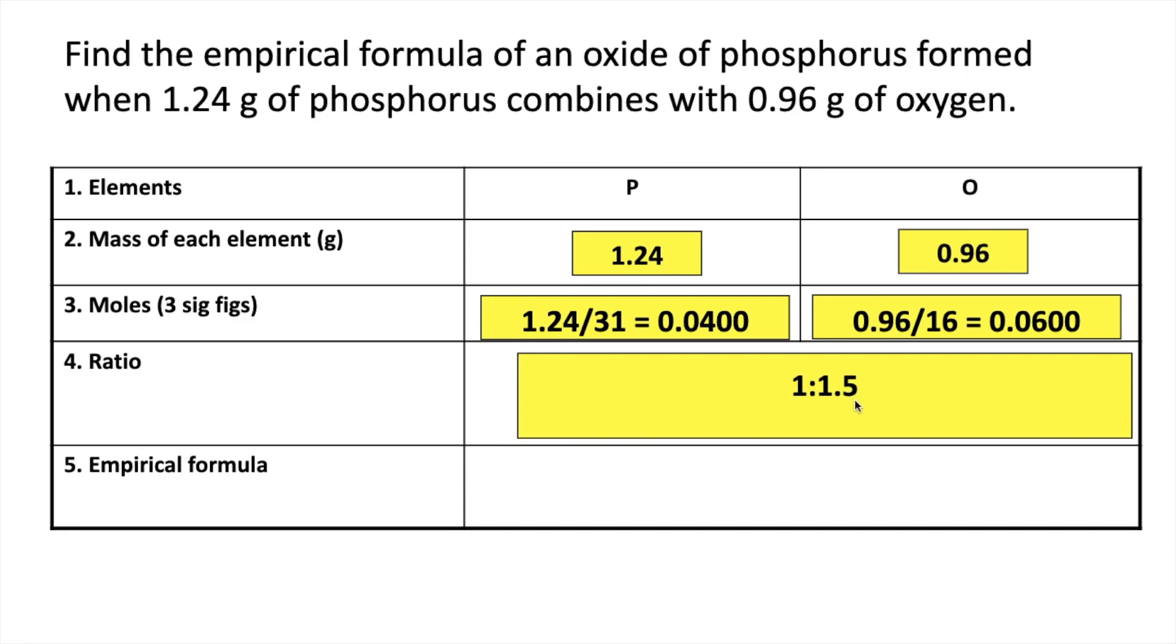So what we would do is multiply out. Multiply by 2, it'll give us a whole number there. We'll get a 3. So we'll get a ratio of 2 to 3. So it's P2O3, the empirical formula for that one.